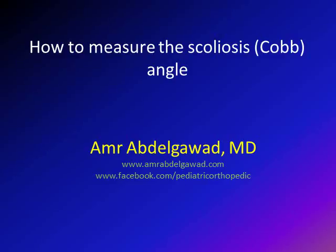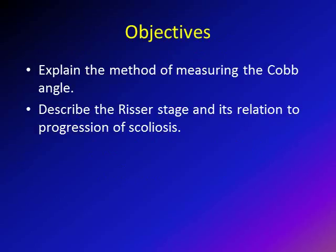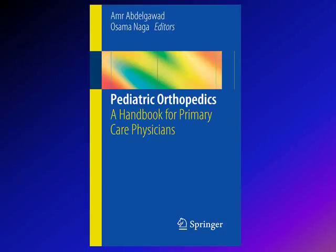Hi, this is Amr Abdelgawad and we're going to discuss today how to measure the scoliosis angle, or what's known as the Cobb angle. The objectives for this lecture are to explain the method of measuring the Cobb angle and to speak about Risser stage and how that affects the progression of scoliosis and how you can detect that in the x-rays. A good source you can use is this book written by myself and Dr. Osama Naga.